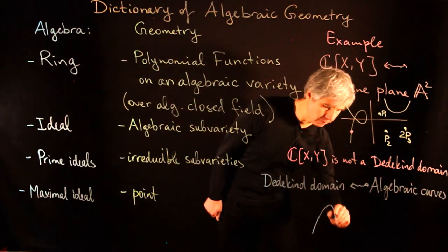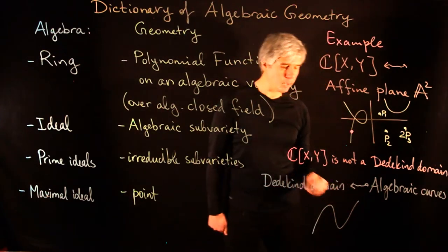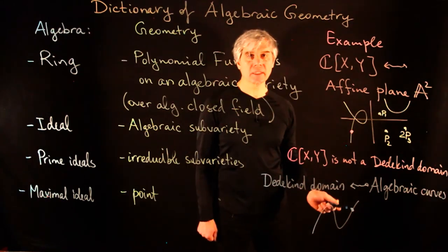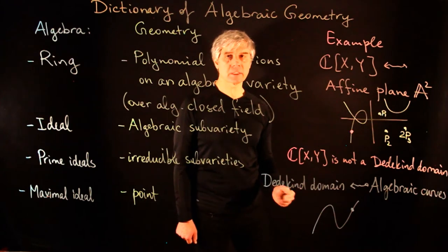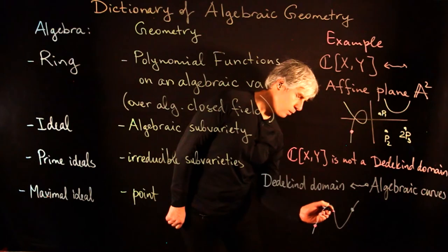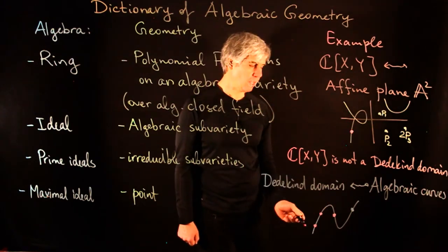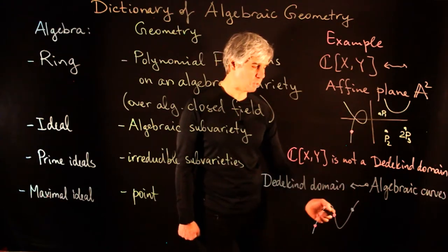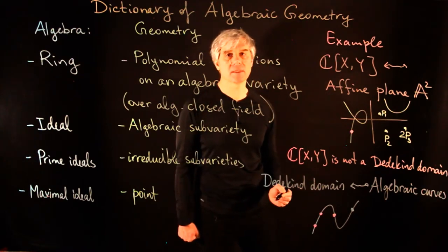So Dedekind domains geometrically correspond to algebraic curves as underlying varieties. If our variety is one-dimensional, then prime ideals correspond to points on this variety, and thus prime ideals are maximal. Arbitrary ideals in the case of a curve correspond to a finite number of points, perhaps taken with multiplicity, where the ideal consists of polynomial functions vanishing at prescribed points with prescribed multiplicities.